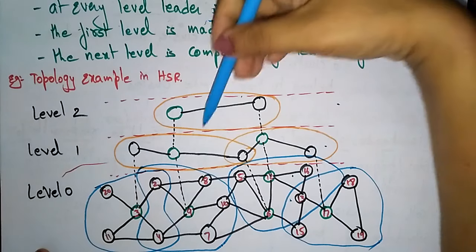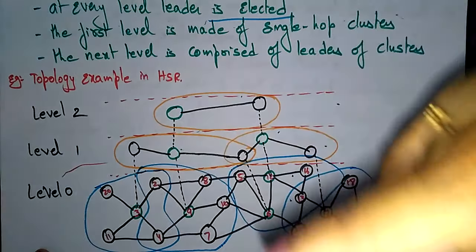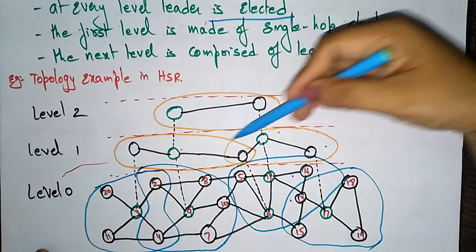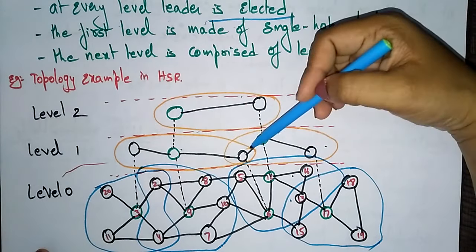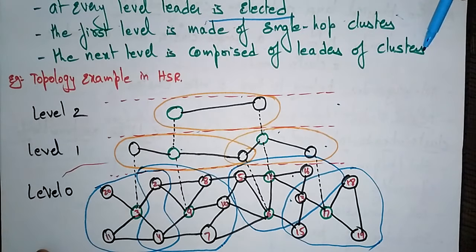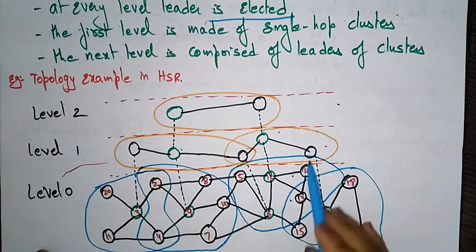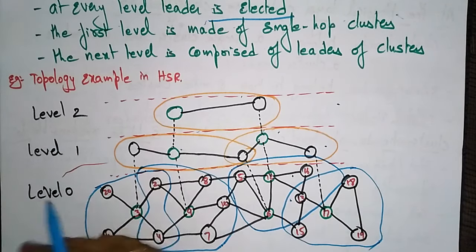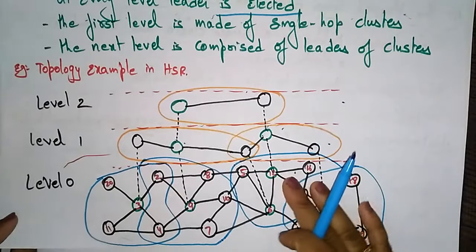The first level is made of single-hop clusters — this is one cluster and this is another cluster — so for each cluster one leader will be there. In the second level you have only one cluster, so one leader. In level one there are two clusters and two leaders, one per cluster. The next level is comprised of leaders of clusters. In total, four clusters are present in this topology.